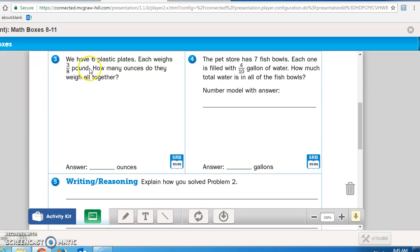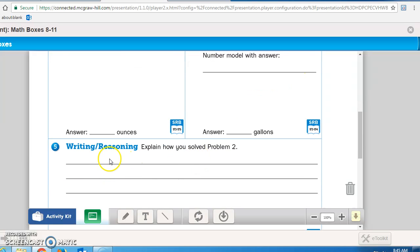Math box 3 says we have 6 plastic plates. Each weighs 3/8 of a pound. How many ounces do they weigh all together? So first you're gonna take the 6 and 3/8 and find it in pounds, and then convert it into ounces. Number 4 says the pet store has 7 fish bowls. Each one is filled with 4/10 gallons of water. How much total water is in all of the fish bowls?